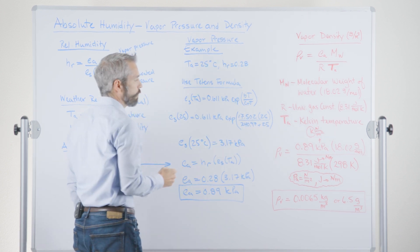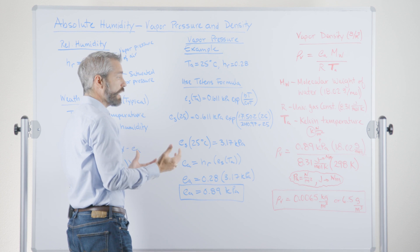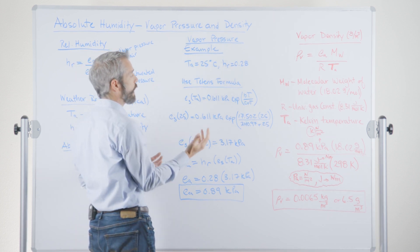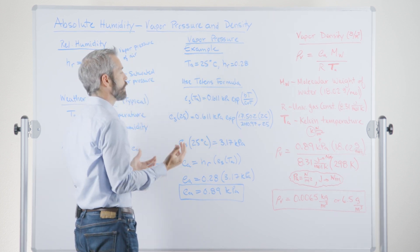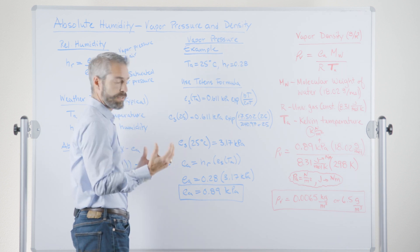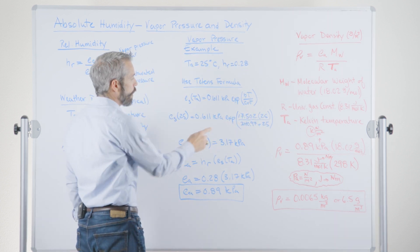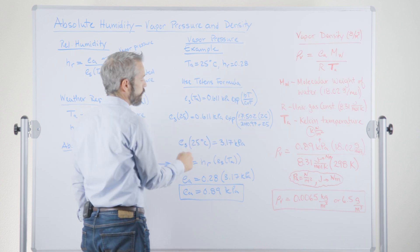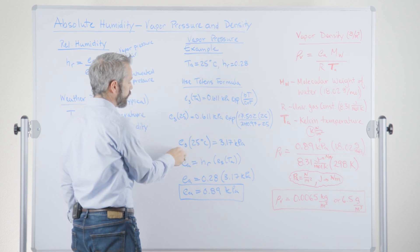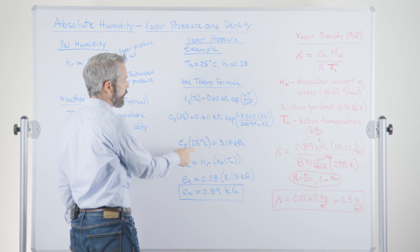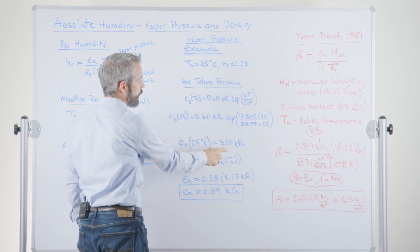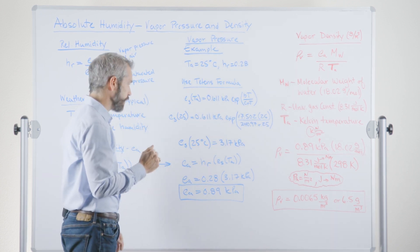Now, this is for liquid water, of course, it's 25 degrees Celsius, so nothing's frozen. If you were working over ice, these constants would be different. But of course, we're not here. So we put this into our calculator, into a spreadsheet, and we easily calculate the saturation vapor pressure at 25 degrees C is 3.17 kilopascals.